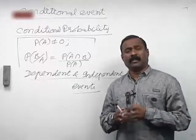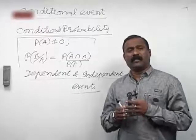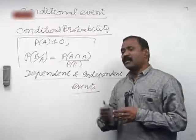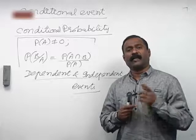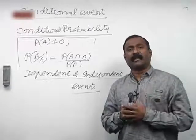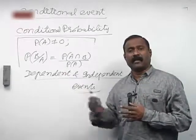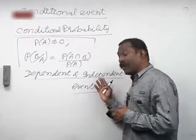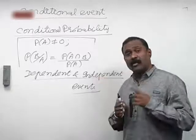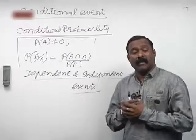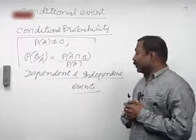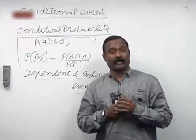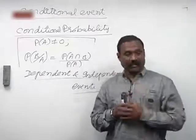In the name itself you have the answer. Dependent events are those events where the occurrence of one event influences the occurrence of another event — then they are said to be dependent events. If the occurrence of one event does not influence the occurrence of another event, then they are said to be independent events.